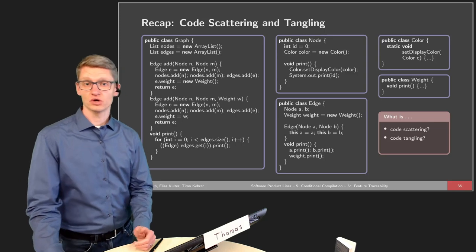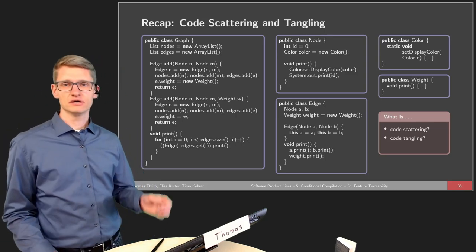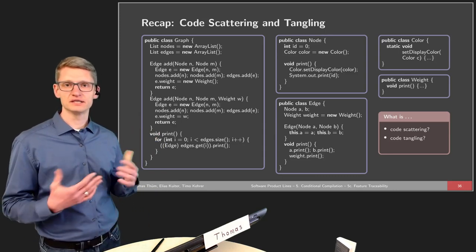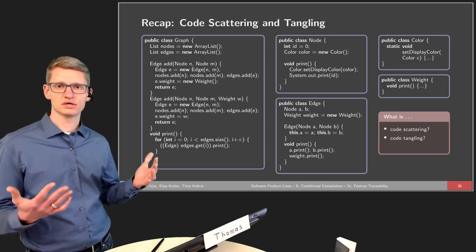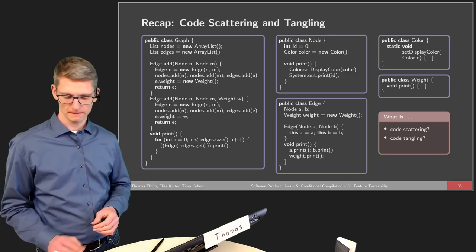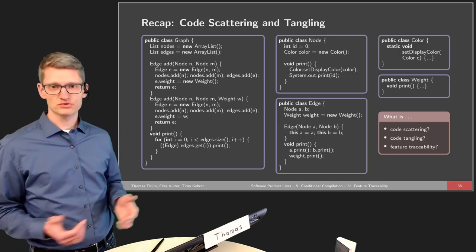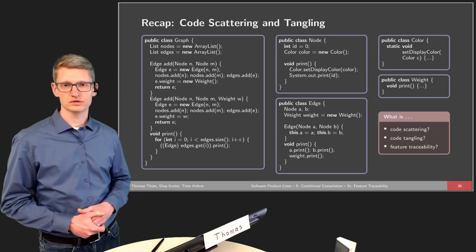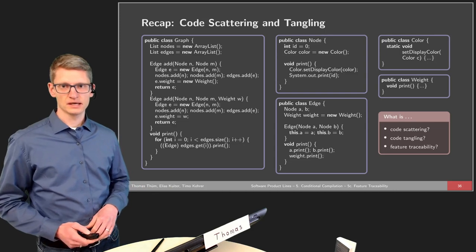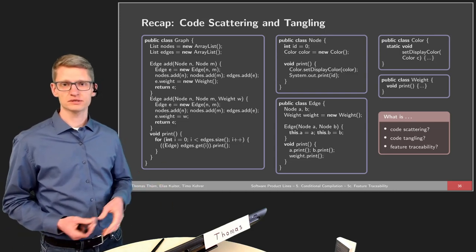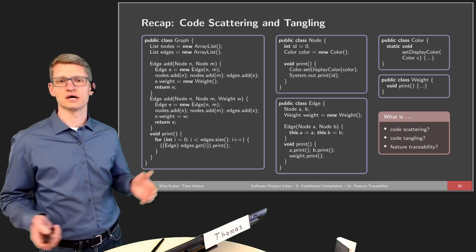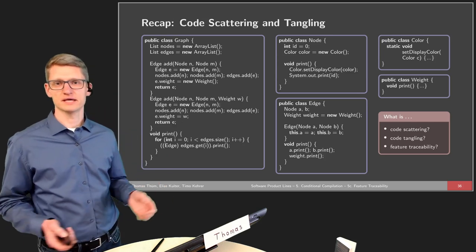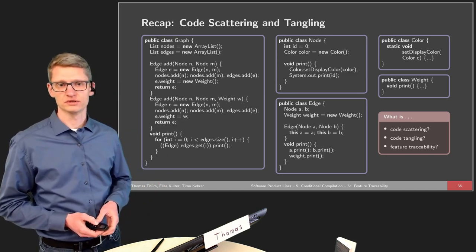We talked about code tangling. Code tangling means that if I look at a certain class or a certain method implementation, I need to understand different features because those features are tangled with each other. And then we talked about feature traceability as the general ability to identify the location of a feature in source code. When it comes to conditional compilation, it's not that easy to understand whether conditional compilation is part of the problem or part of the solution for feature traceability.